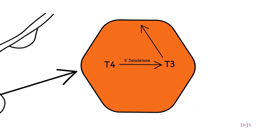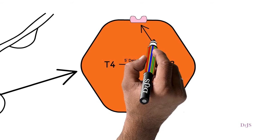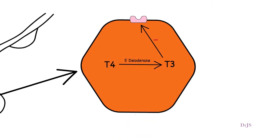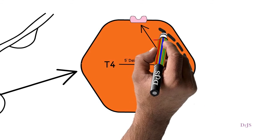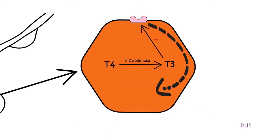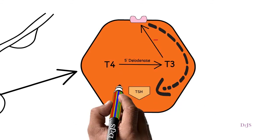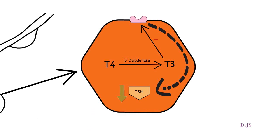This T3 down-regulates the receptors present on the cell membrane. As a result, TSH production is reduced and may reach up to zero level. This decreased production of TSH causes decreased production of T3 and T4 from the follicular cells of the thyroid gland.